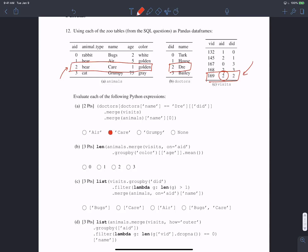In part b, we're asked to find the length of the resulting table when we merge animals with visits on the animal ID, grouping by color and taking the average age. We're doing implicitly an inner join, joining animals and visits, grouping by color. The fact that we're taking the age column and taking the mean don't really change the length of this result.